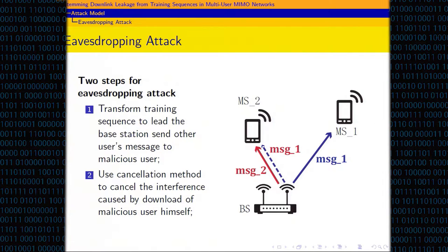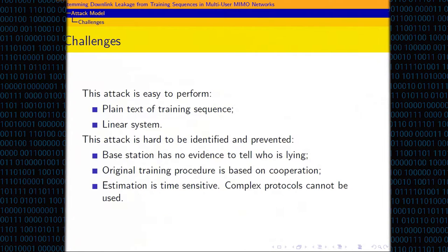When MS2 receives its download component, it can use interference cancellation to decode MS1's download. This attack is very hard to deal with because it is easy to perform — training sequence and CSI are in plain text and the whole estimating procedure is a linear system. The attack is hard to identify and prevent because the original training sequence requires no authentication, leaving no evidence for the base station to tell who is using a forged training sequence. Also, the estimating window is very short, so heavy protocols cannot be used to secure this procedure.